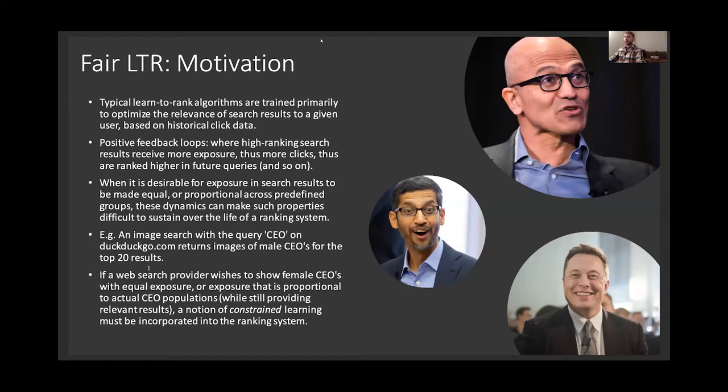But in any case, if a web search provider wishes for that sort of effect, if they want to show equal amounts of female CEOs with males, or more specifically if they want equal exposure between male and female search results, then you have to introduce some kind of notion of constrained learning. So typically machine learning is unconstrained optimization like a regression. But if you have a requirement which needs to be satisfied by the result of that model, then you need to incorporate constraints somehow and now you're doing constrained optimization.